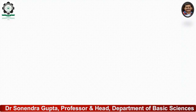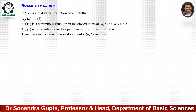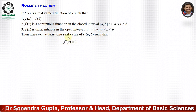The first topic is Rolle's Theorem. If f(x) is a real valued function such that: (1) f(a) = f(b); (2) f(x) is continuous in the closed interval [a, b], where a ≤ x ≤ b; and (3) f(x) is differentiable in the open interval (a, b), that is a < x < b — then there exists at least one real value c in the open interval (a, b) such that f'(c) = 0, where f'(c) is the derivative of the function at point c.